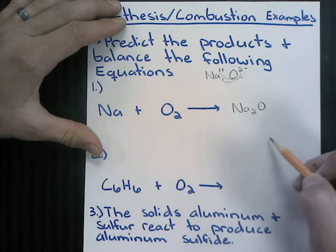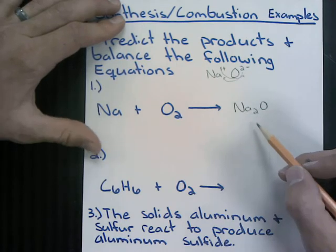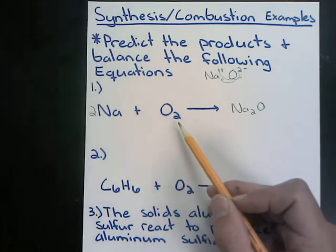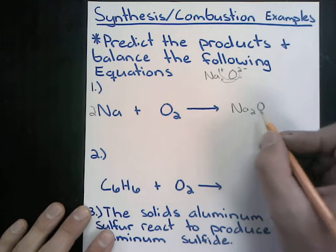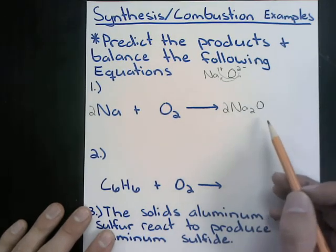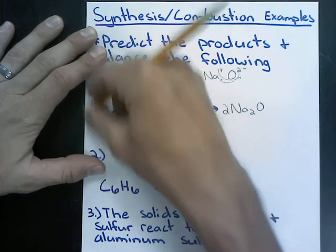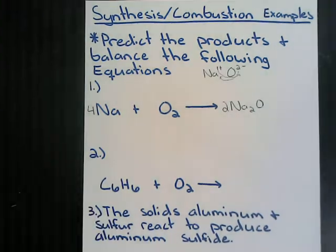Now we balance Na2O. We have 1 Na on the left and 2 on the right, so we put a coefficient of 2 in front of Na. On the left we have 2 oxygens, and on the right only 1, so we put a 2 in front of Na2O. That changes our sodium count to 2 times 2, so we need 4 — it's always important to balance in pencil so we can fix mistakes.